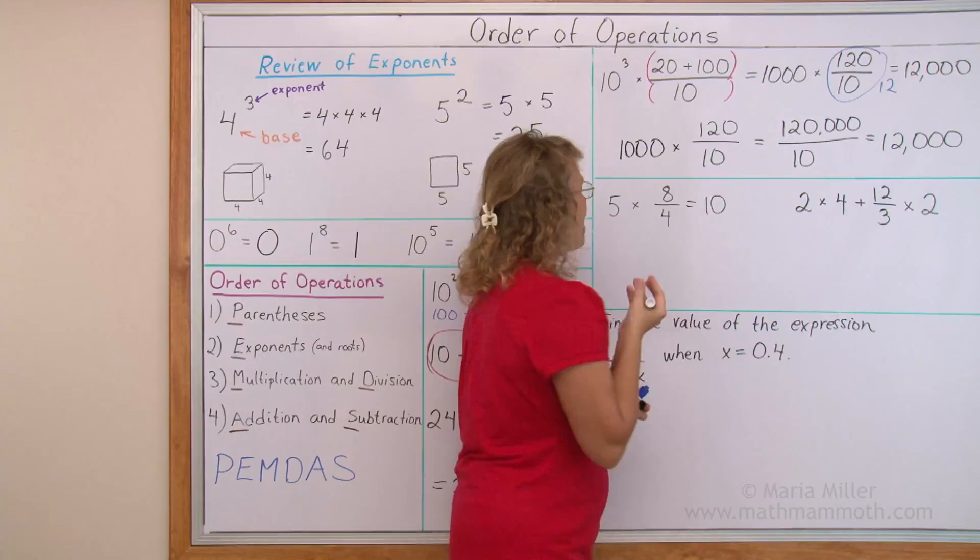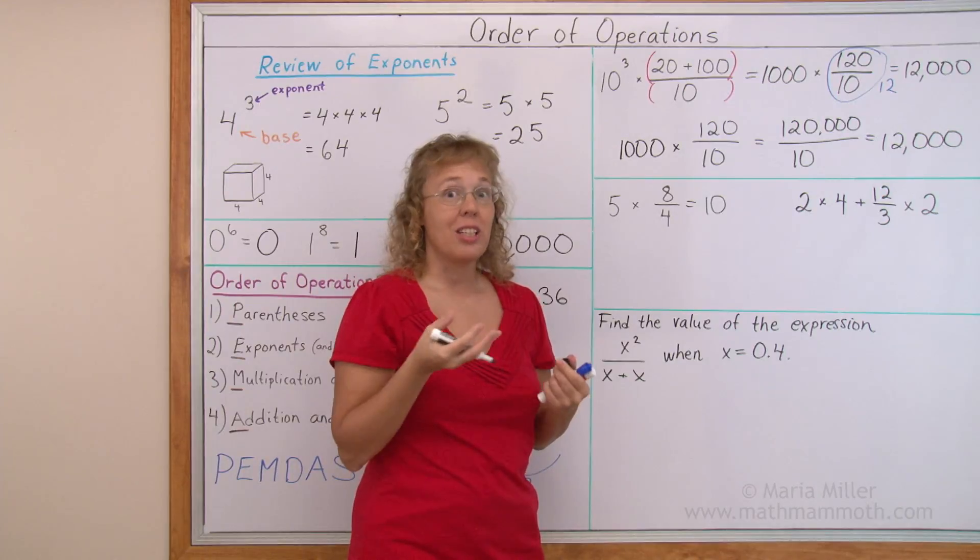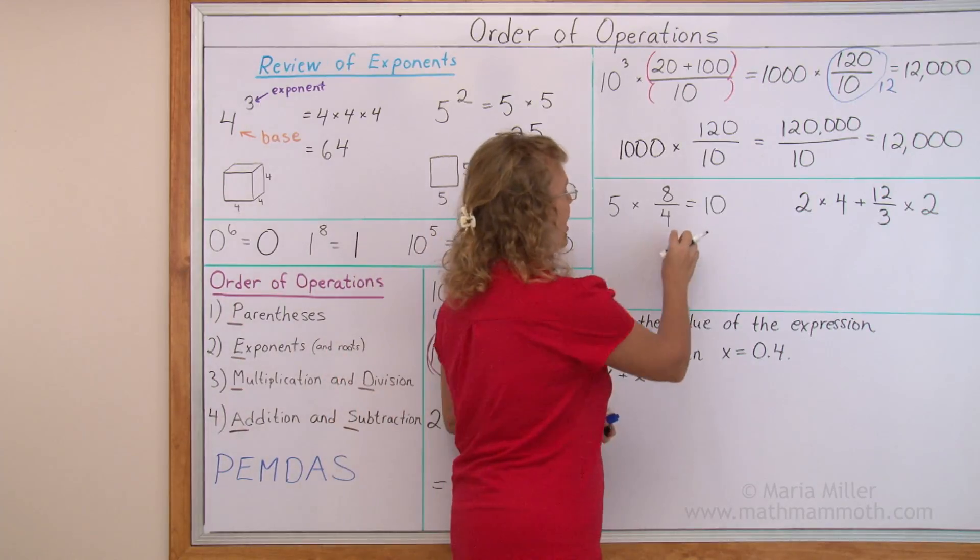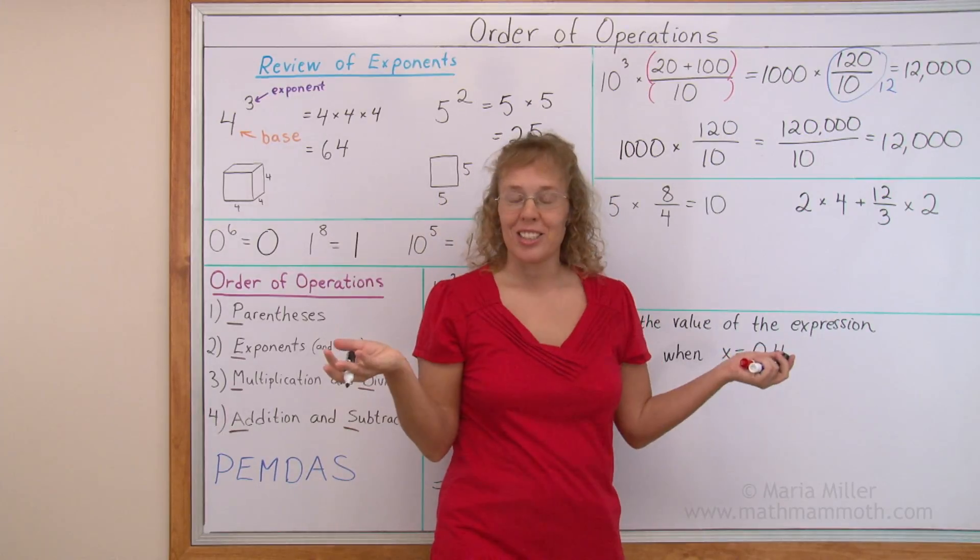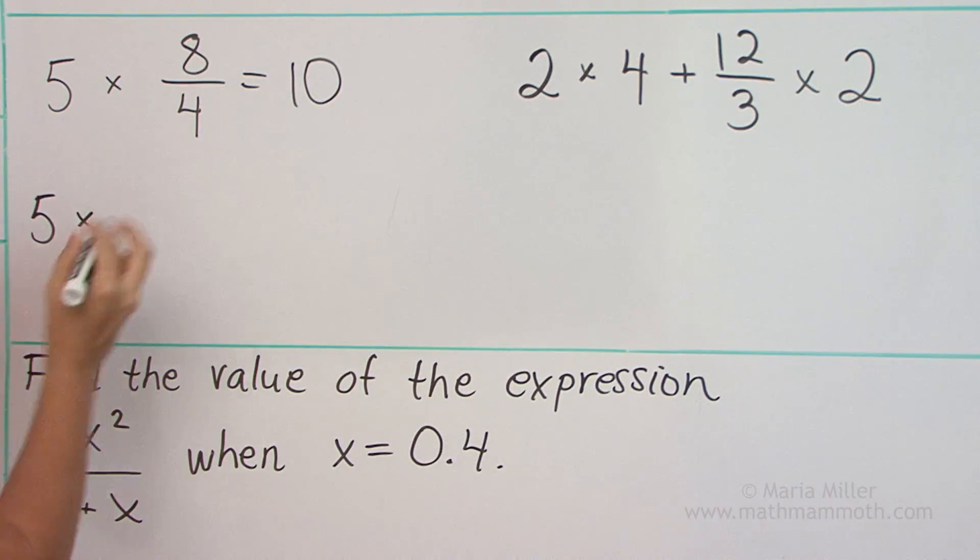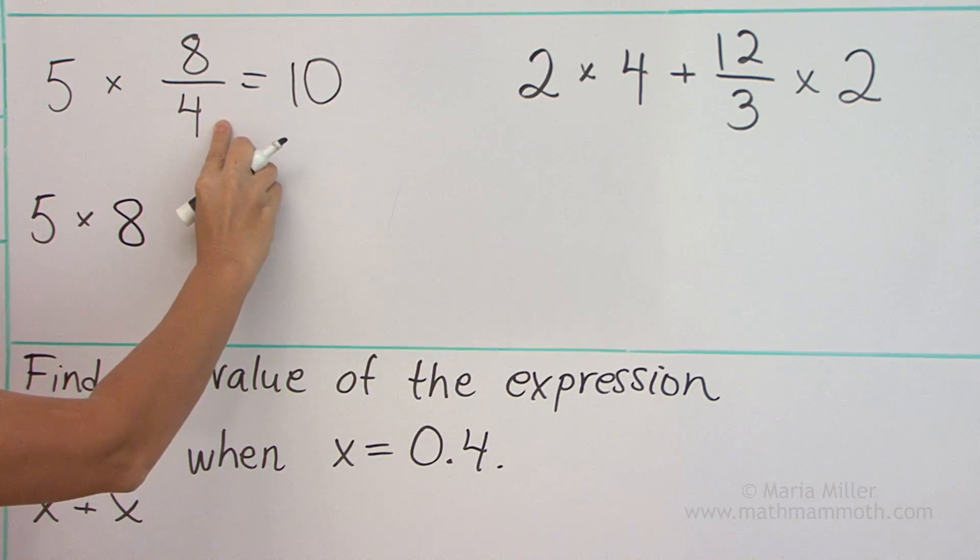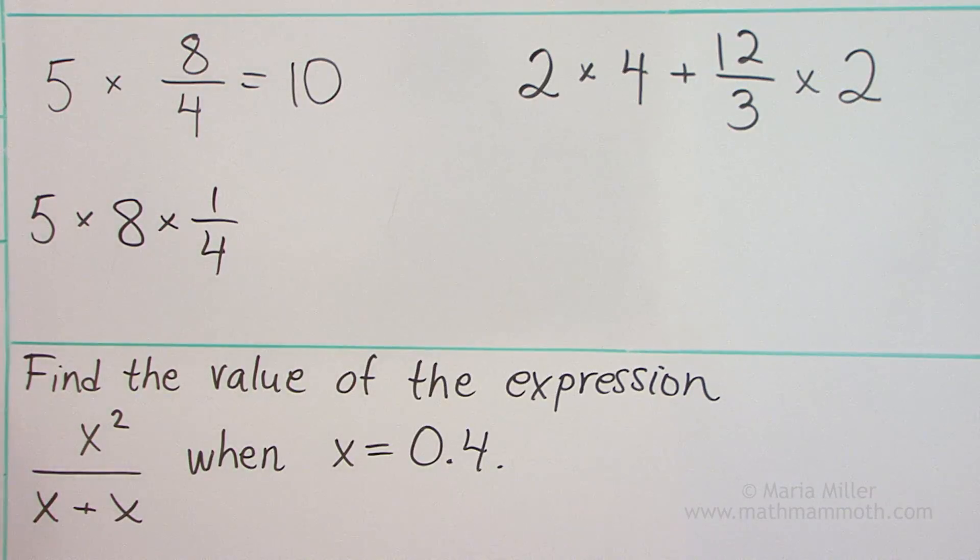I want to just real quickly show you the reason why, if you only have multiplications and divisions, you can actually divide first. And that is because each division can be written as a multiplication. Divisions are multiplications. And this is how it works. 5 times 8, and then there's a division by 4, but I can write it as a multiplication by 1 fourth. So the division by 4 is the same as multiplication by 1 fourth, its reciprocal. And so now you can clearly agree, right, that if there's two multiplications, you can either multiply these first or these first.